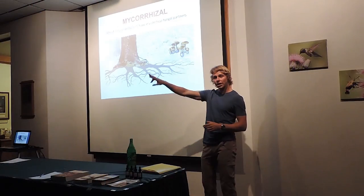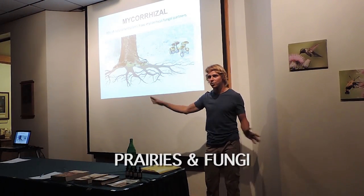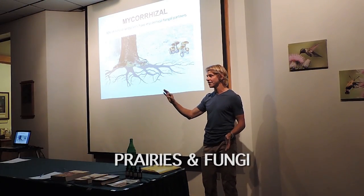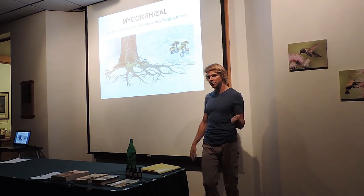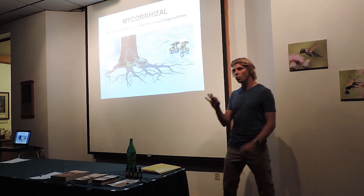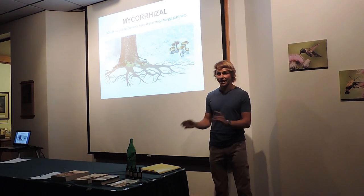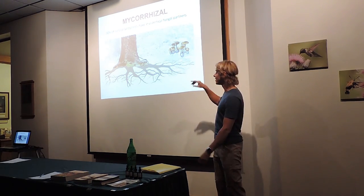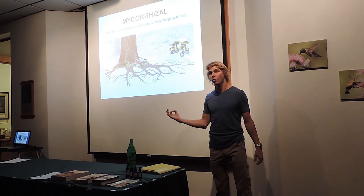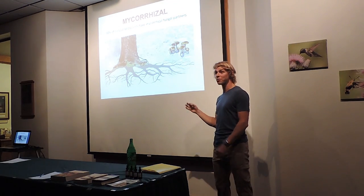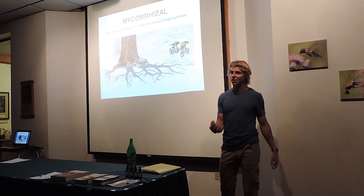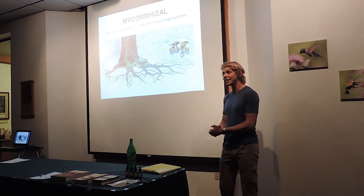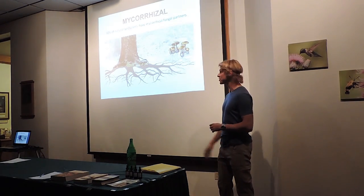When you look out at this prairie, that prairie wouldn't look like that without fungi in the soil. There's a Kansas researcher who studies prairie ecology, and he studied over 100 tall grass species in the Kansas prairie and found that 100% of them absolutely had a fungal partner — they absolutely required it. Without these fungi, without these grasses, there would be no habitat for the Massasauga rattlesnake and all the animals that it eats, all the insects, all the wildflowers as well.